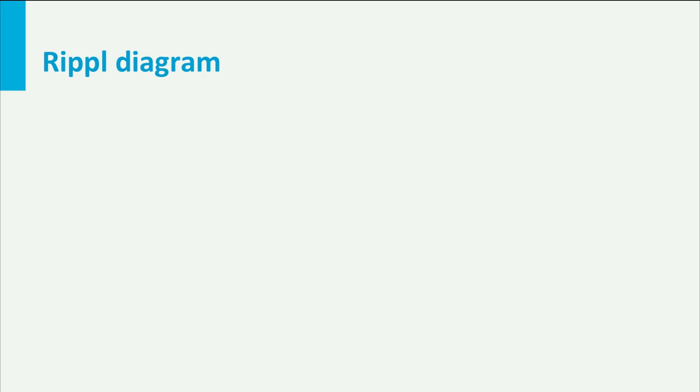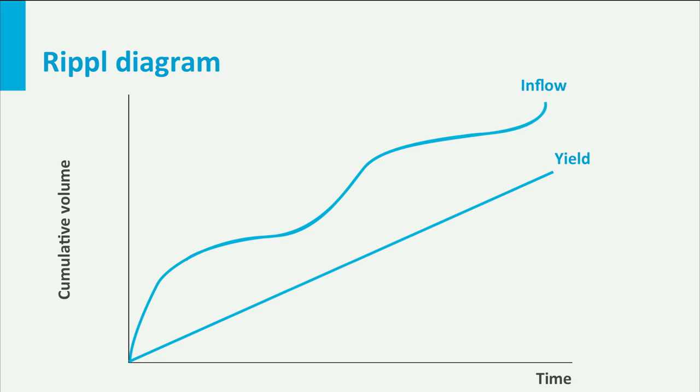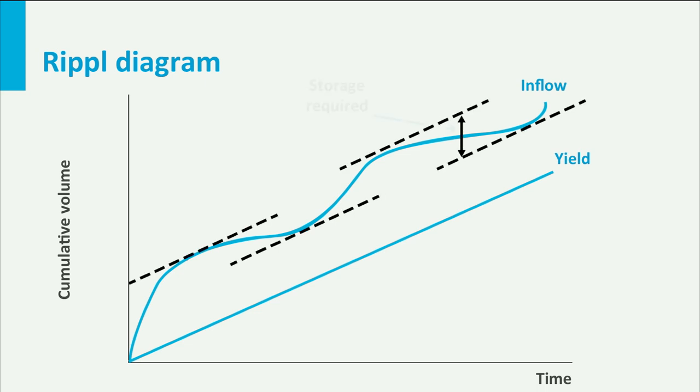A reservoir needs to be able to bridge periods of low supply. A simple way to design the minimum storage capacity of a reservoir is the so-called ripple diagram. The wiggly line shows the cumulative inflow over time into the reservoir. The straight line is the minimum constant yield from the reservoir that we would like to see. By drawing lines parallel to the yield line that are tangent to the cumulative inflow, we can readily determine the storage capacity needed to bridge periods with low flow. Of course, our demands also vary largely over time, but the same principle holds — except now we should use the ratio of supply over demand as input and would like to ensure the output is as close to 1 as possible.